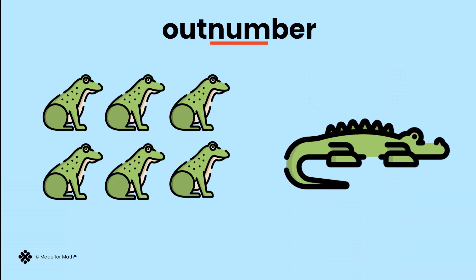Outnumber. Num means number. Out means away. Outnumber means to number more than another. The frogs outnumber the alligator six to one.